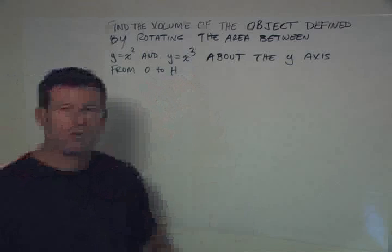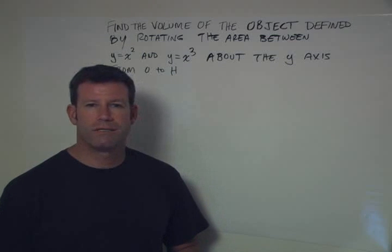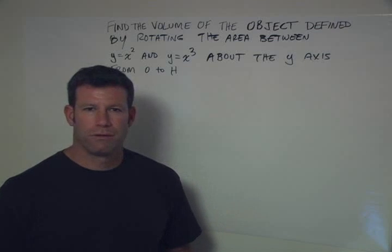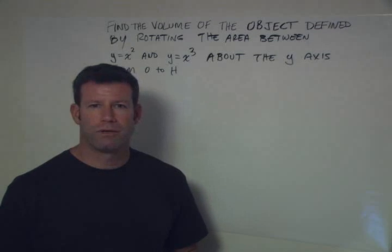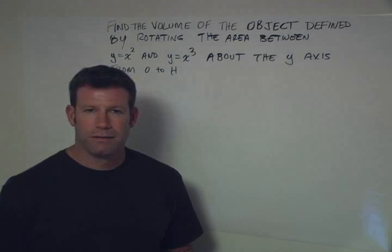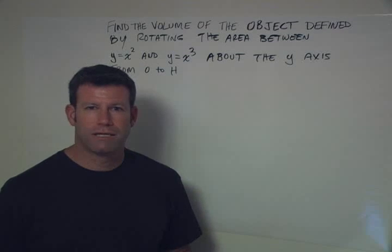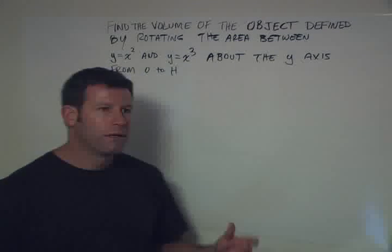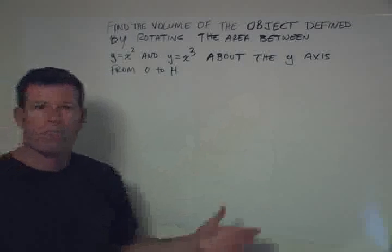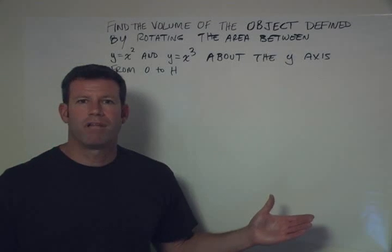So we have a variation on the basic problem. Calculus is mostly about somebody trying to take something simple and then disguising it and seeing whether you can handle the disguise. So the disguise here is we're revolving about the y axis. Does it make a difference? Not really.